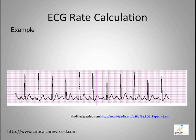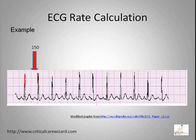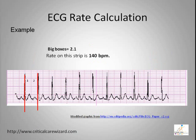Let's try this example. Start here, then count the number of big boxes. The number of big boxes is about 2.1. In other words, the heart rate on the strip is 140 beats per minute.